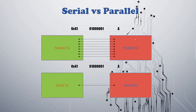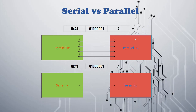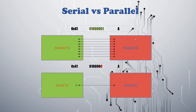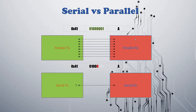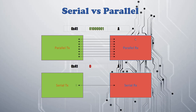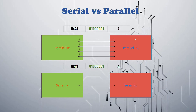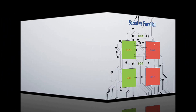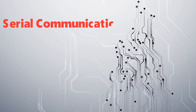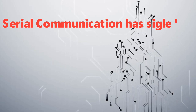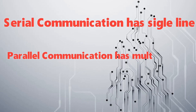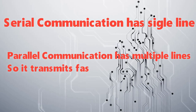You will see how the character A is transferred in the case of parallel transfer and serial transfer. Parallel transfer transmits all the bits of character A at a single time using multiple lines. In the case of serial, it takes more time as it uses a single line. Serial communication has a single line, but parallel communication has multiple lines, so it transmits faster than serial.